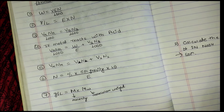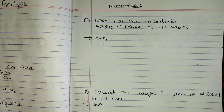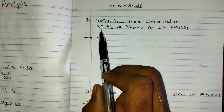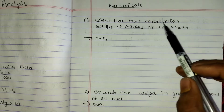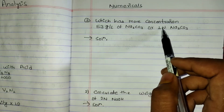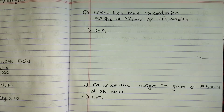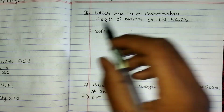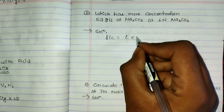Numerical 1: Which has more concentration — 53 gram per liter of Na₂CO₃ or 1N Na₂CO₃? We need to convert between gram per liter and normality. The formula is gram per liter = equivalent weight × normality, which allows us to compare the two concentrations.